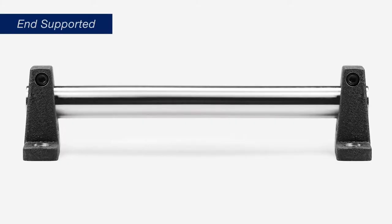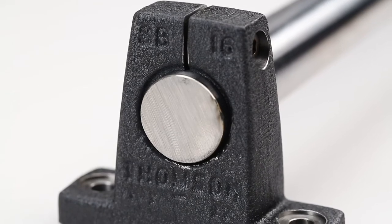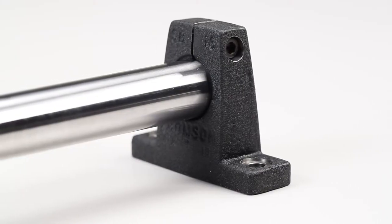End supported shafts are supported at both ends with the middle of the shaft clear of the mounting surface. This configuration is used when the loads are light or deflection from the shaft is acceptable.